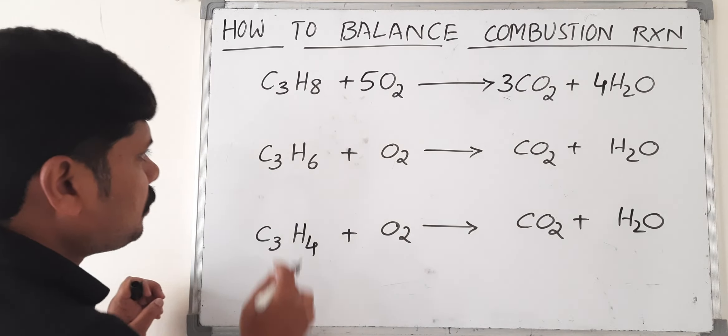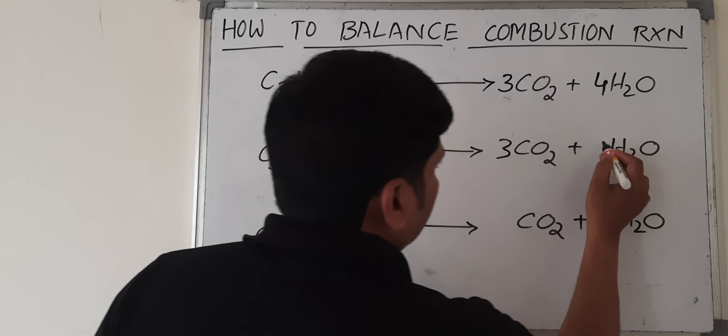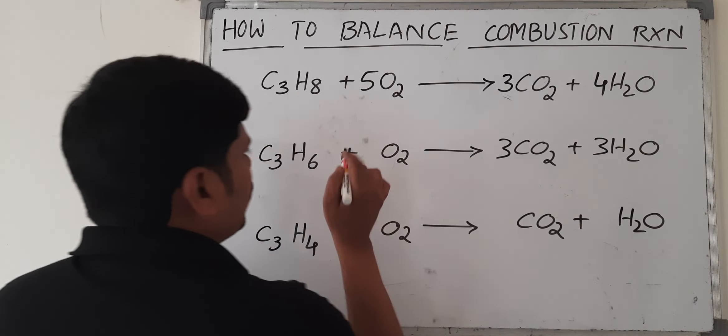C3H6: three carbons are there, so 3 CO2 and 3 H2O. Now 4 plus 3 is going to be 7, so 7/2 O2.